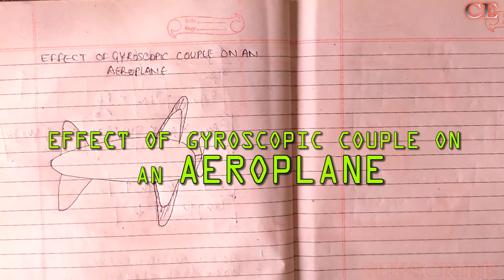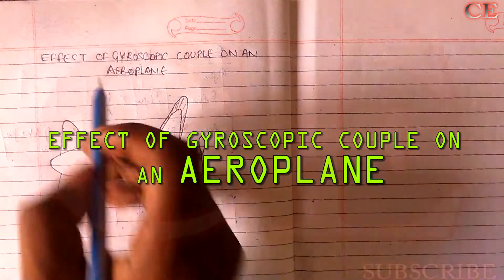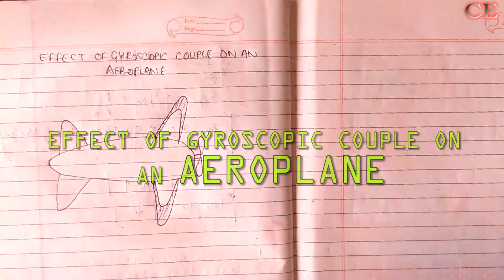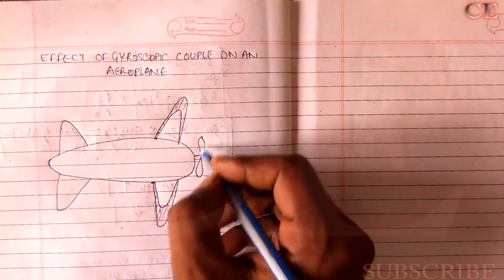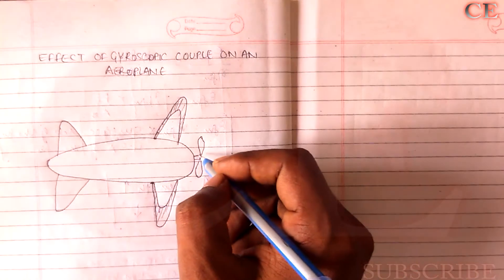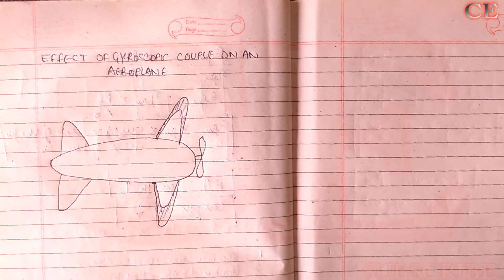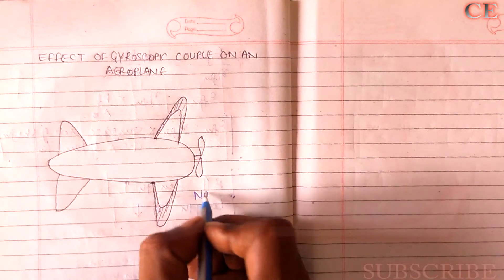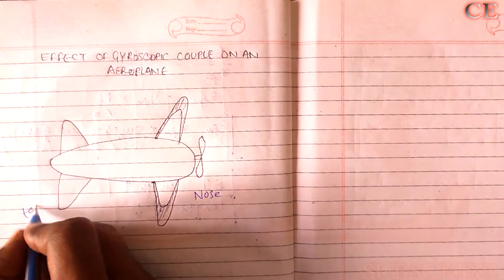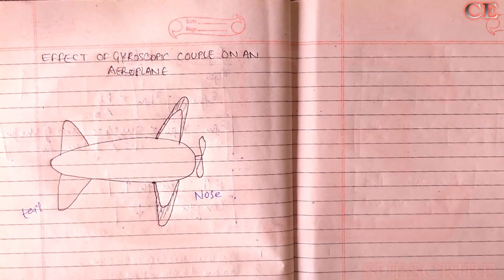Hello friends, so today in this video we are going to talk about the effect of gyroscopic couple on an airplane. So what happens to the airplane when it moves, when it takes a left turn or a right turn, or when its rotor is rotating clockwise or anticlockwise. Then what is the effect on the airplane and what happens to its nose or tail. So let's check it out.